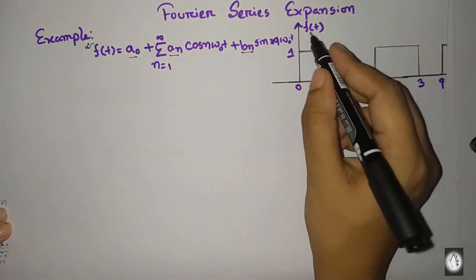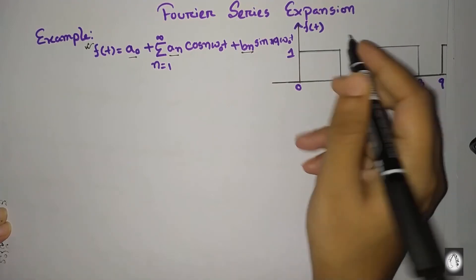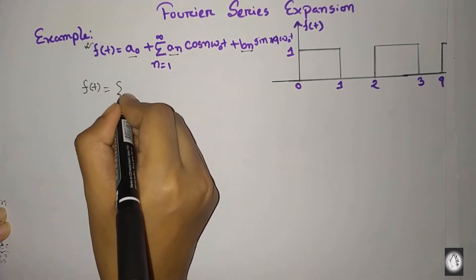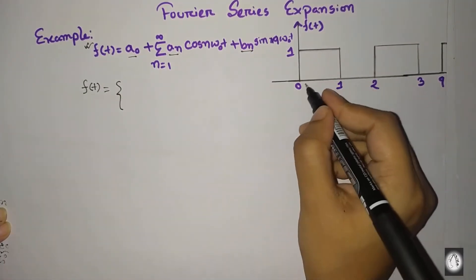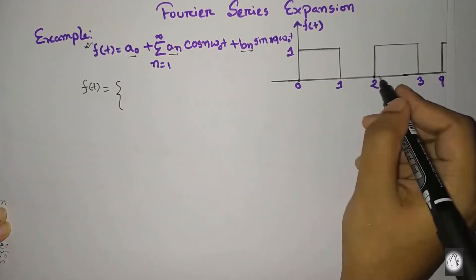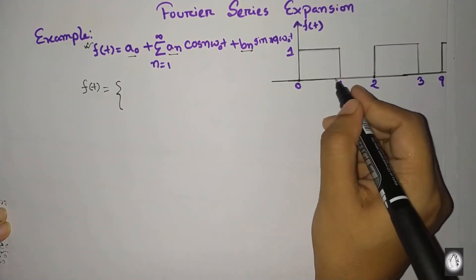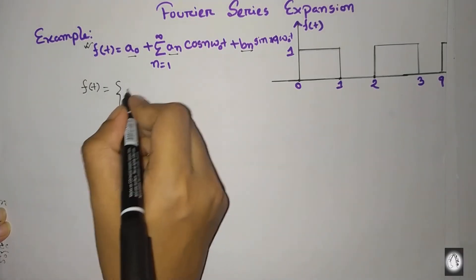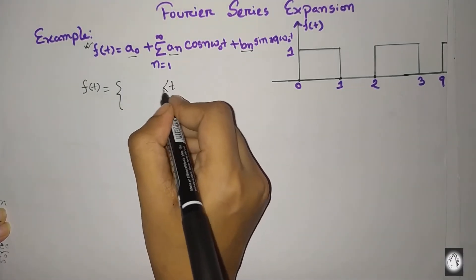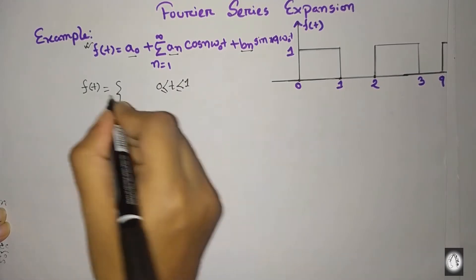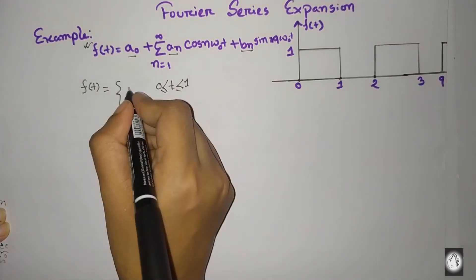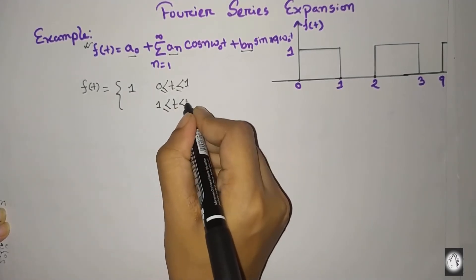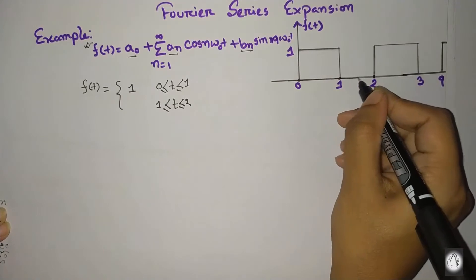First of all, the function is mathematically represented. f(t) is equal to 1 when t is from 0 to 1, and equal to 0 when t is from 1 to 2. The time period is 0 to 2.